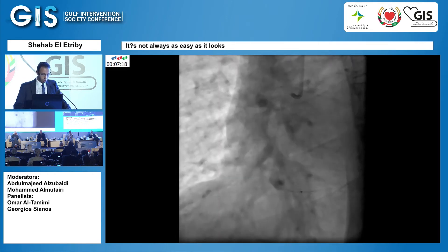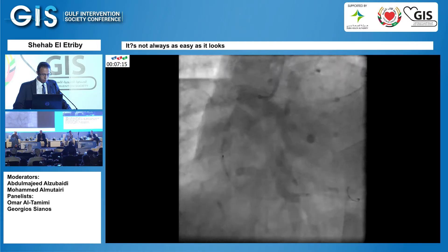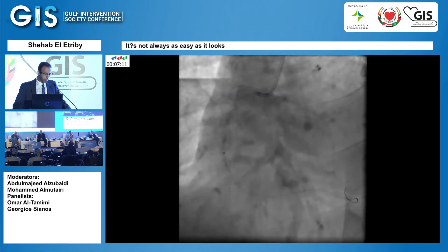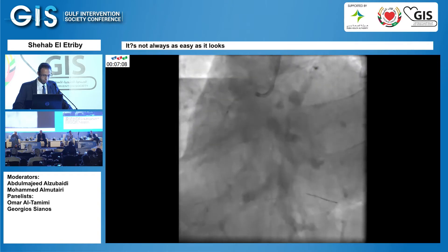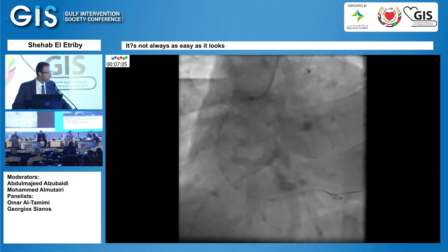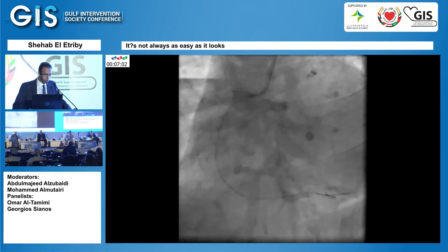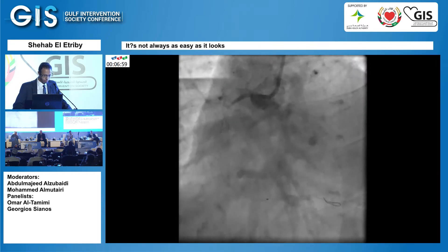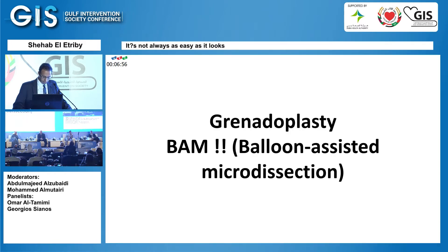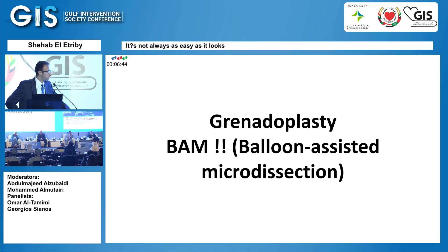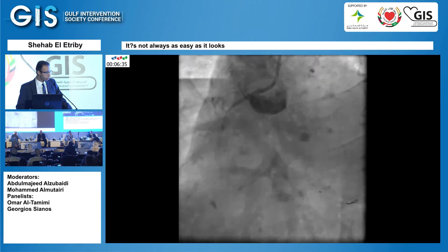However, the 1.25 balloon didn't pass. I tried a lot, even with a buddy wire, and inflated this part to try to facilitate passage. The buddy wire also failed and the 1.25 balloon still failed to pass. Failing to pass, I decided to inflate the balloon and do a technique called balloon-assisted micro dissection — inflating a 1.25 or 1.5 balloon until it ruptures, creating micro-dissection flaps to allow the balloon to enter.